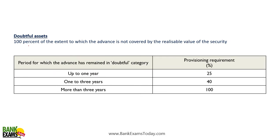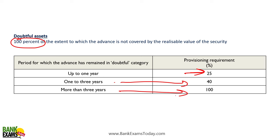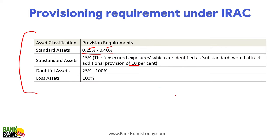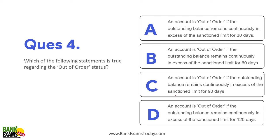For doubtful assets: 100% provisioning is required for unsecured exposures. For secured doubtful assets, provisioning is 25% if the advance has remained doubtful for up to one year; 40% for one to three years; and 100% for more than three years. Please remember these two tables — they are very important from an examination point of view.